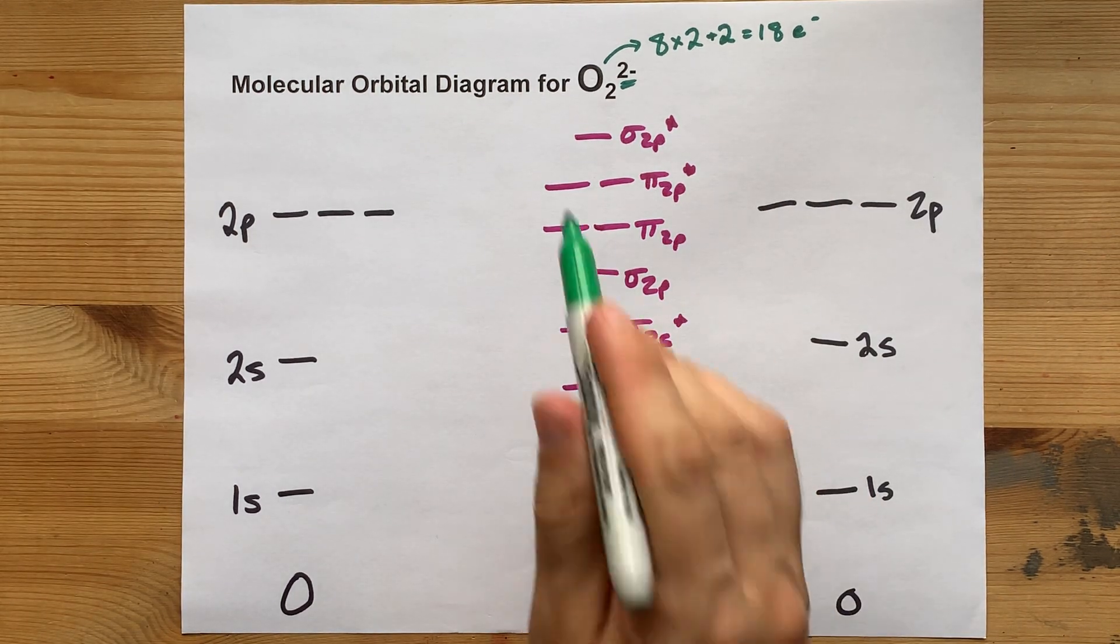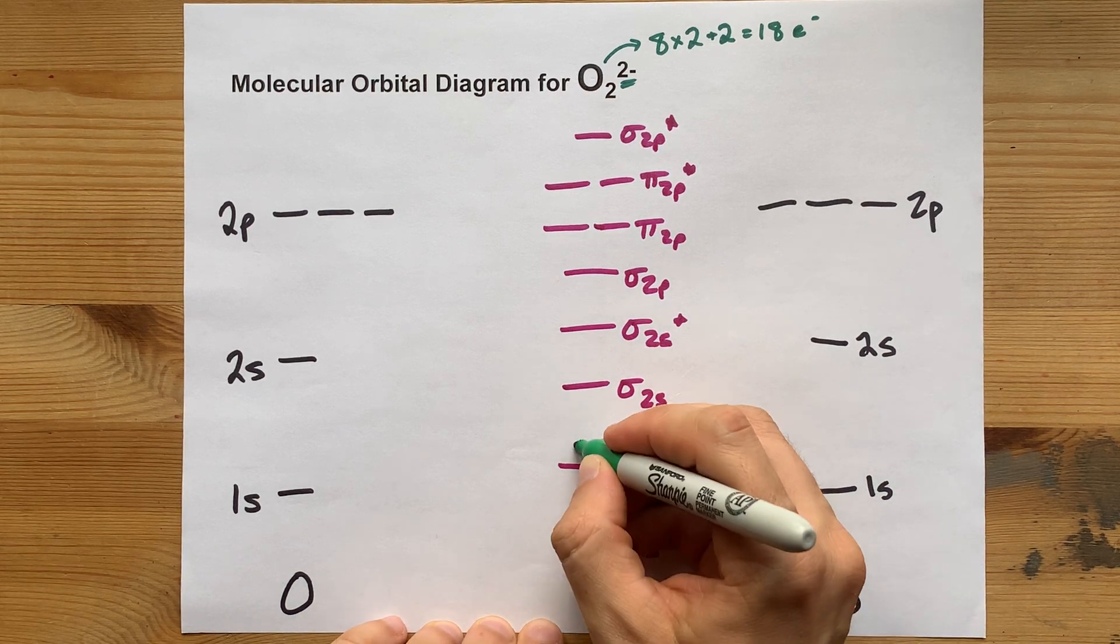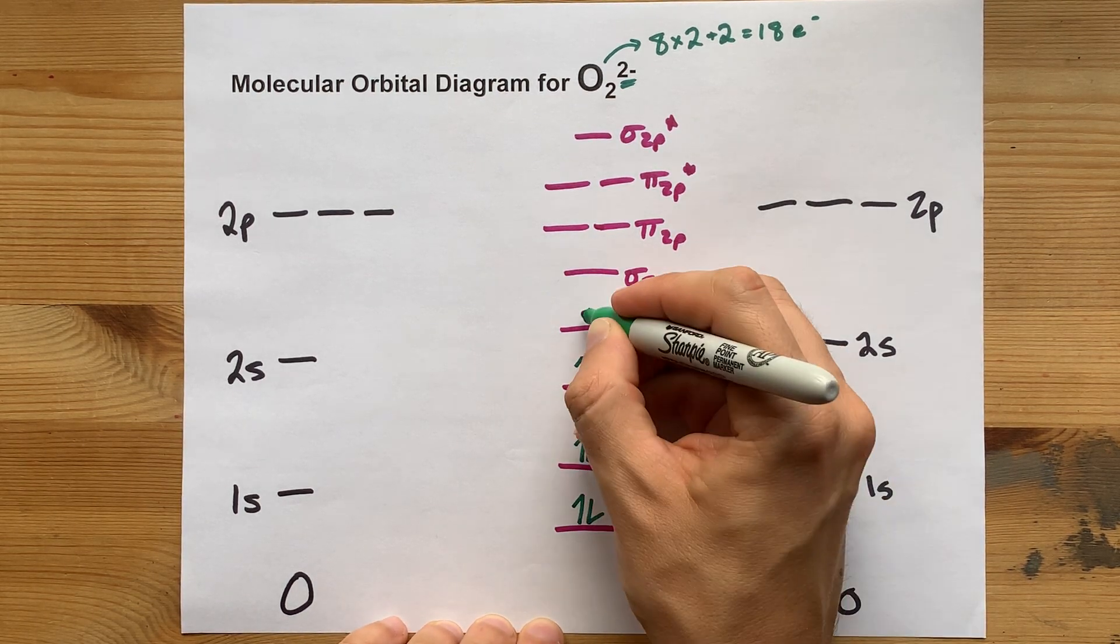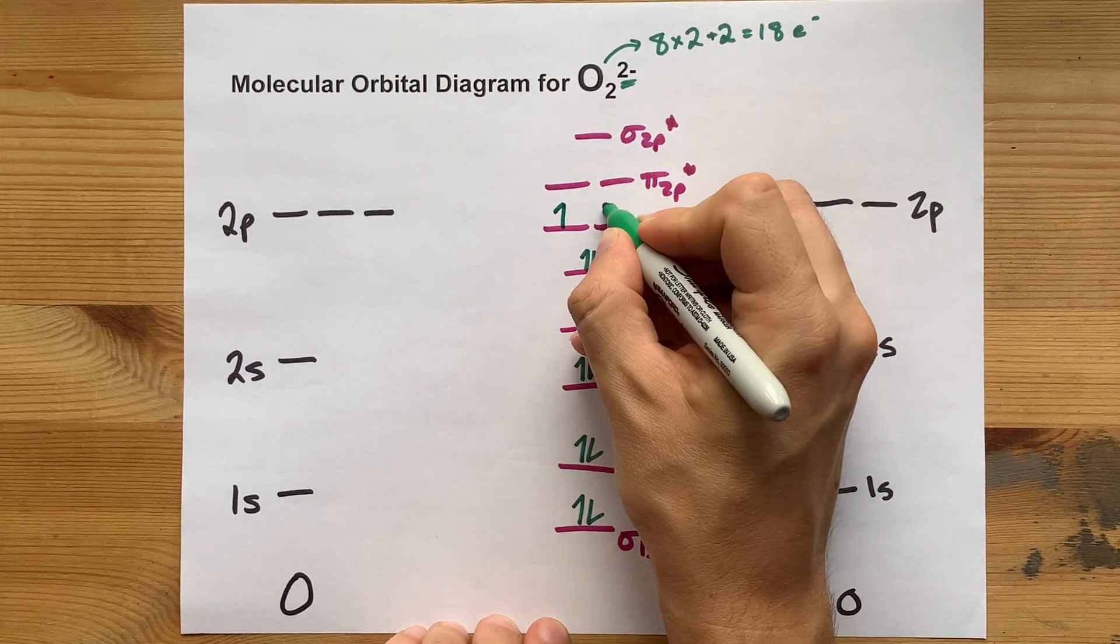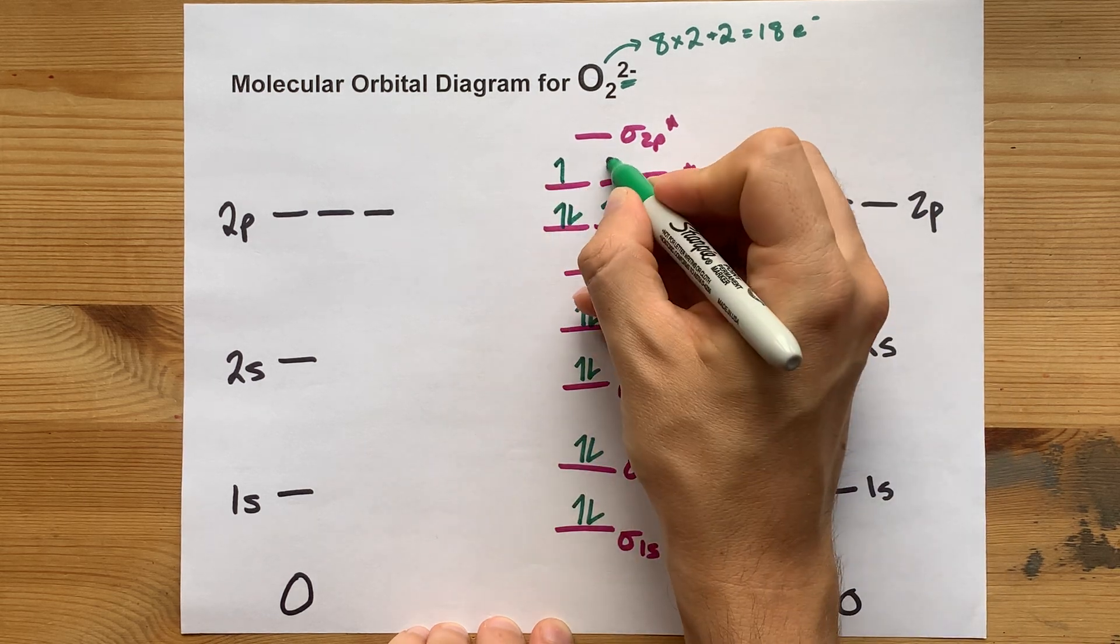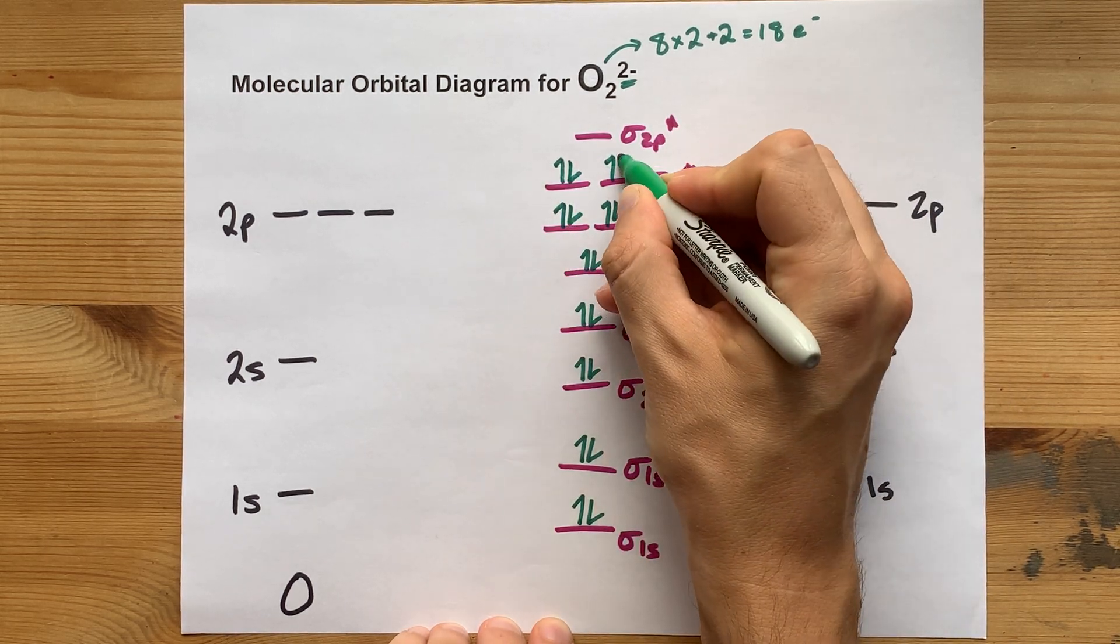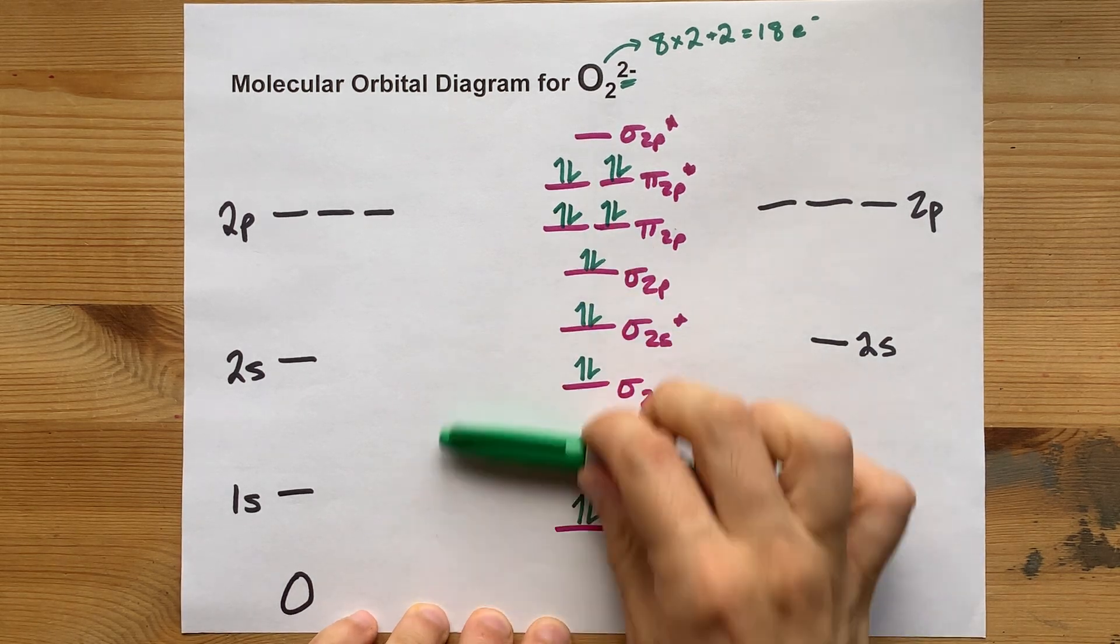Let's fill this from the bottom up. Aufbau principle. 1, 2, 3, 4, 5, 6, 7, 8, 9, 10, 11, 12, 13, 14, 15, 16, 17, 18. That is all 18 electrons from the bottom up.